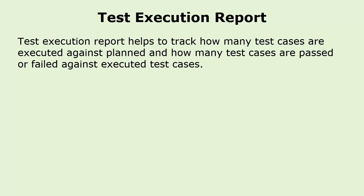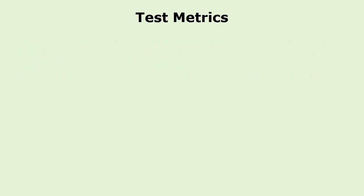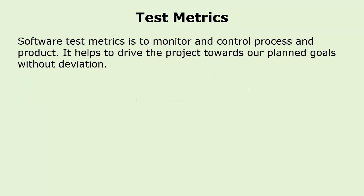Test execution report helps to track how many test cases are executed against planned, and how many test cases passed or failed against executed test cases. Software test metrics are used to monitor and control process and product — they help to drive the project towards planned goals without deviation. Earlier we made a video on test metrics and explained it in detail.